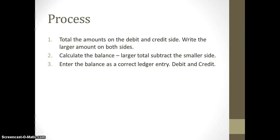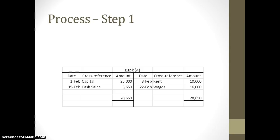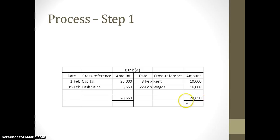Probably best shown through an example — I'm going to talk you through two separate examples. The first one involves our bank ledger, which is an asset account. We have all these transactions from the month of February. Step one: total the amounts on each side and write the larger of the two at the bottom of both sides. Our debit side equals $25,000 plus $3,650, totaling $28,650, which is the larger amount because the credit side is $10,000 plus $16,000, being $26,000. So we write $28,650 on both sides and rule off with a double line under that total to show the end of the period.